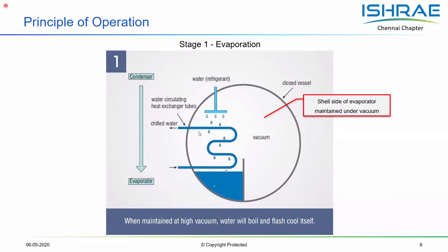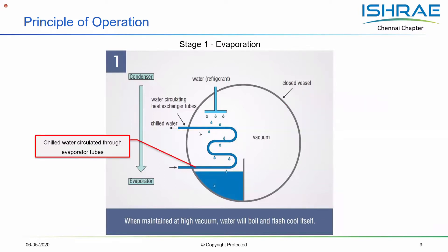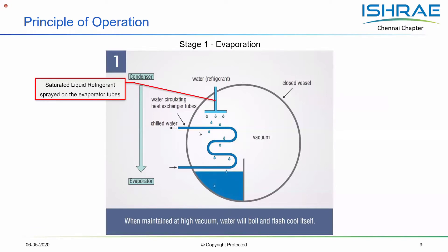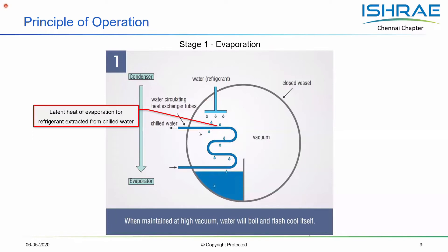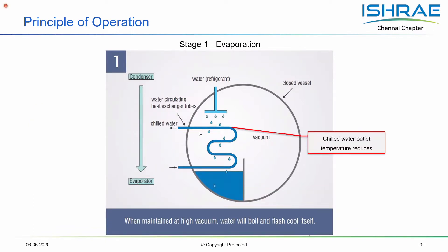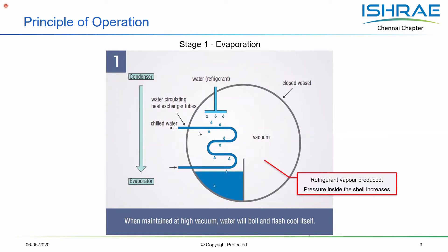To have this entire system working, we have to maintain vacuum inside the chamber, because at this particular vacuum only the boiling of the refrigerant takes place. The latent heat for this evaporation of the refrigerant is derived from the chilled water, like in any conventional refrigeration cooling system. The saturated liquid refrigerant is sprayed on the evaporator tubes, and when this water falls onto the tubes, heat transfer takes place between the chilled water and the refrigerant, which instantaneously evaporates the refrigerant. As a result, the chilled water temperature reduces and leaves the chiller at the required temperature.